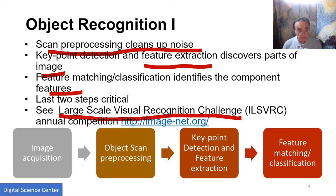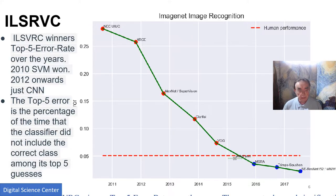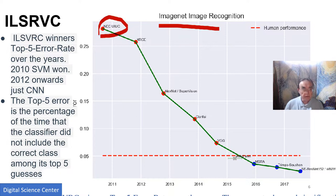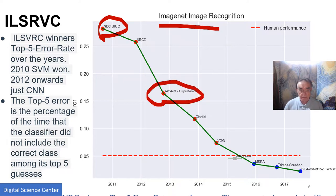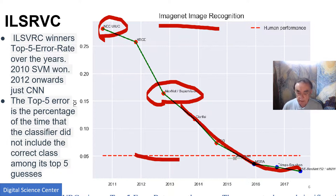Here we have these steps: get the image, pre-process, identify the key points, classify the features. Here's a plot of the performance on ImageNet. Back in 2010, people at UIUC got around 27% efficiency. Then we had the breakthrough with AlexNet at 15–16%, and then these are all deep learning. Now we're back at 3% or something, and humans do 5%. Computers have won.